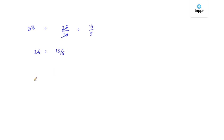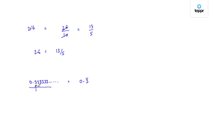Now let us take a non-terminating decimal like 0.333333 and so on. We can write this number as 0.3 bar. This bar represents the set of digits which are repeating after a certain number of places. Since the number 3 repeats itself after every place, we write it as 0.3 bar, which signifies that 3 repeats itself continuously.